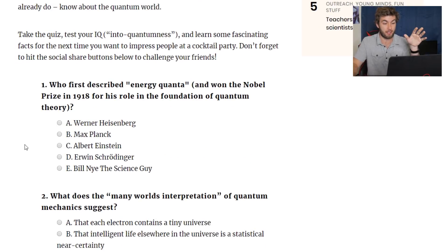Who first described energy quanta and won the Nobel Prize in 1918 in the foundation of quantum theory? Werner Heisenberg, Max Planck, Einstein, Schrodinger, or Bill Nye the Science Guy? Well, we know it's clearly not Heisenberg. He was dumb. Here's the deal. The only one I'm certain won a Nobel Prize was Einstein for the photoelectric effect. But when I think of the father of quantum mechanics, or at least the first pioneer, I think of Max Planck. But I'm not sure if he won a Nobel Prize.